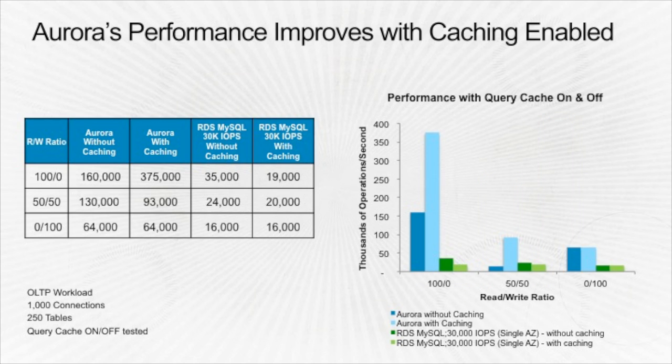On caching benchmarks: with 100% reads and 0% writes, Aurora without caching delivers 160,000 ops per second, and with caching 375,000 — makes sense since caching only helps on reads. With a 50/50 read-write ratio, Aurora still shows good performance but it drops somewhat, likely because caching provides less benefit in a blended workflow. For 0% reads and 100% writes, caching makes no difference — performance is the same either way. Interestingly, for MySQL in general, caching is not the recommended config, so its performance actually goes down with caching enabled.